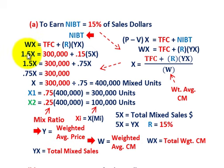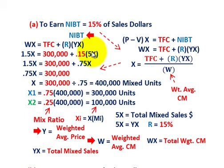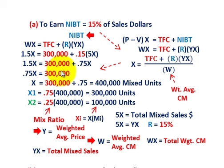Substituting values: our weighted average contribution margin W is $1.50, and total fixed cost is $300,000. Rate R is 15%, and total mixed sales is $5 times X. So: 1.5X = 300,000 + 0.15 × 5X = 300,000 + 0.75X. Moving 0.75X to the left side: 0.75X = 300,000. Dividing both sides by 0.75 gives X = 400,000 total mixed units to be sold.